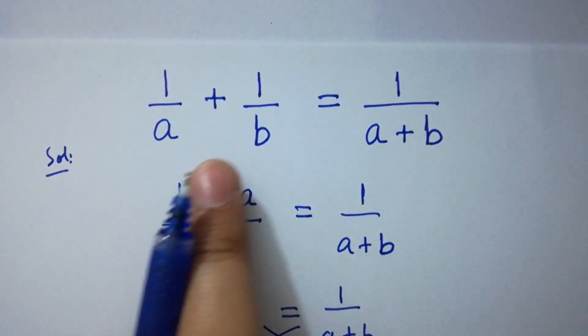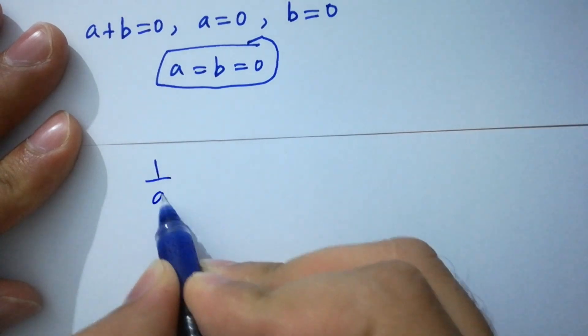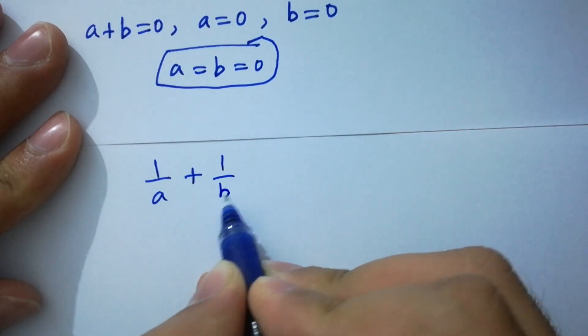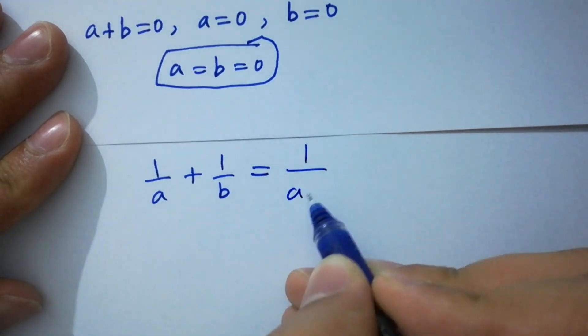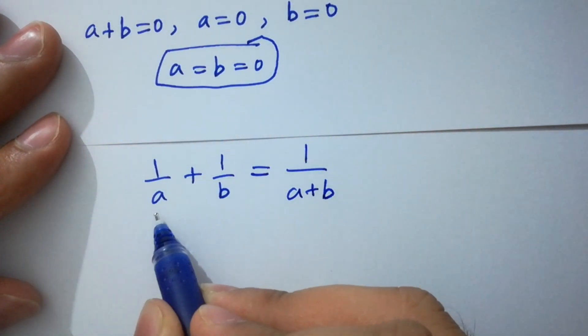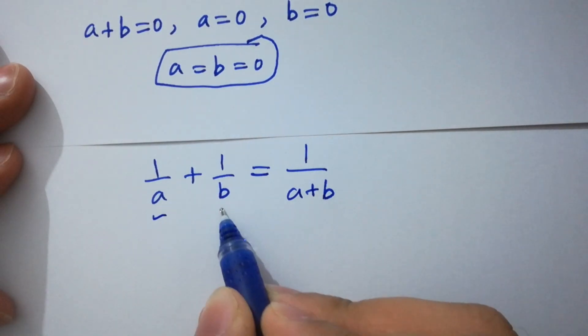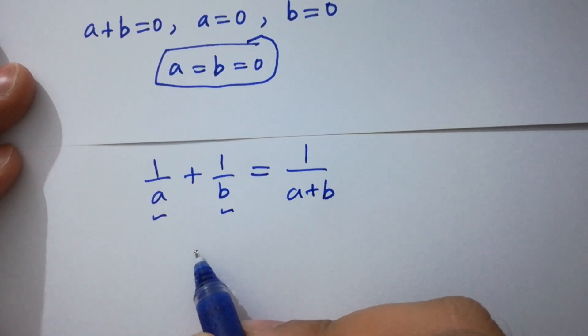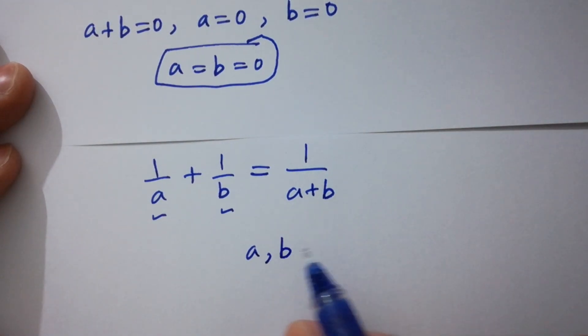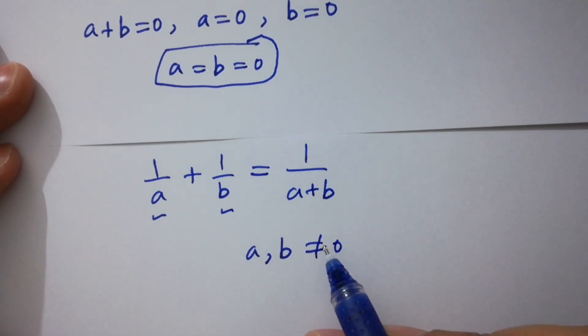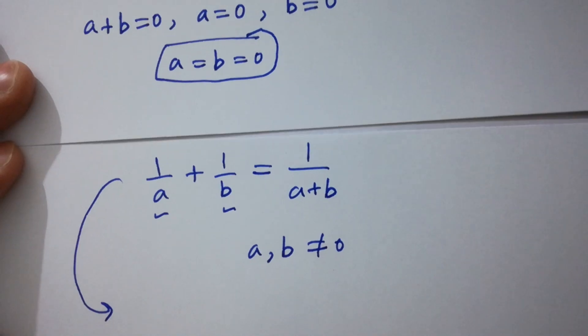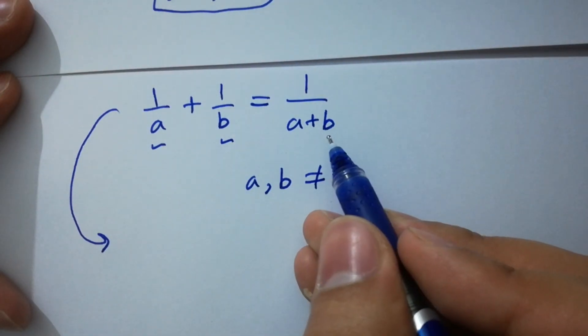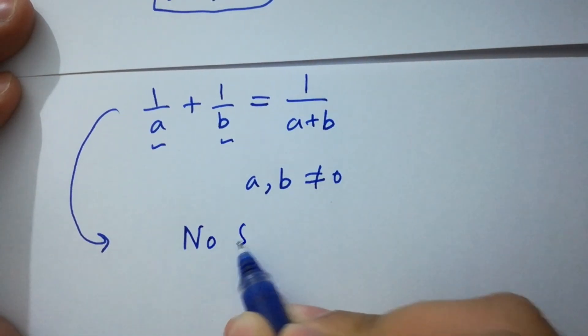But in the original equation 1 over a plus 1 over b equals 1 over a plus b, a and b appear in the denominator, which cannot be 0. So ab does not equal 0, which shows that 1 over a plus 1 over b equals 1 over a plus b has no solution.